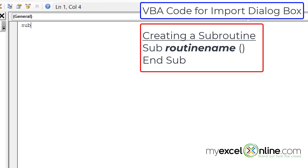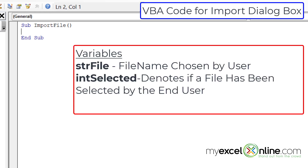To start, I'm just going to type sub import file, then press enter. You will see that the parentheses have been added as well as the end sub, which means I can start writing my subroutine in between these two lines. I'm going to need a few variables for this import. The first one I need is a variable to keep the name of the file that I wish to import.